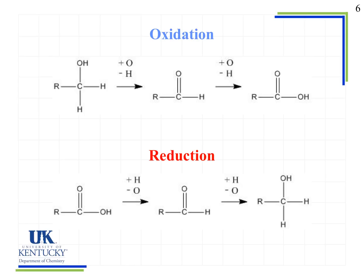An aldehyde can be further oxidized by the addition of oxygen or loss of hydrogen. Here, the aldehyde forms a carboxylic acid with a C double bond O and an OH — we've gained an oxygen. We don't readily see the change in hydrogen here, but the gain in oxygen confirms oxidation. Reduction is just the opposite: going from a carboxylic acid to an aldehyde shows a reduction in the number of oxygen bonds, and from an aldehyde to an alcohol we gain a hydrogen and lose a bond to oxygen.